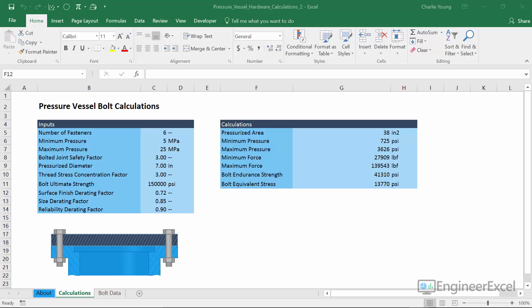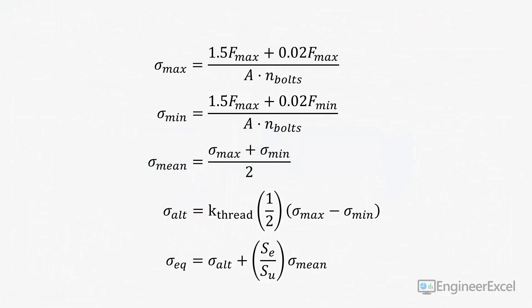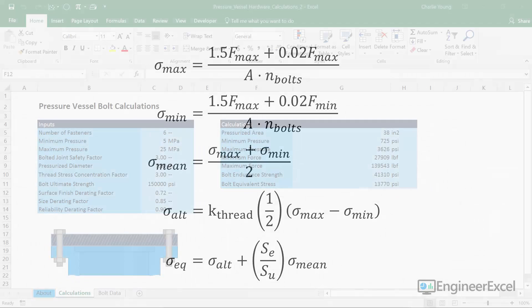With all these preliminary calculations out of the way, the next thing we need to do is calculate the required total area for the bolts. To do that, we need to solve this system of nonlinear equations. There are five equations and five unknowns. The reason it's a system of nonlinear equations is because the first two equations are nonlinear — that area appears in the denominator on the right-hand side. The remaining three equations are linear, but because those first two are nonlinear, that makes the whole system nonlinear and we can't solve it using traditional linear algebra methods.